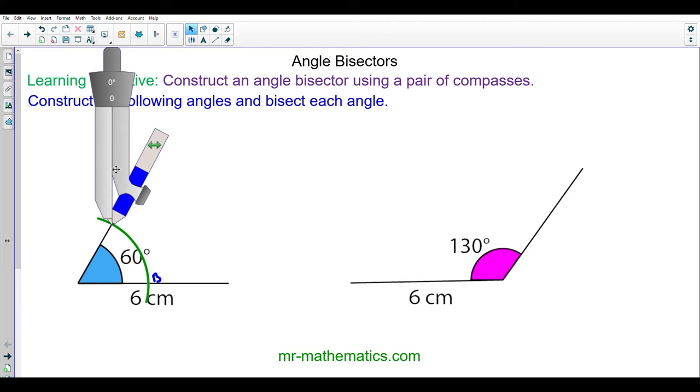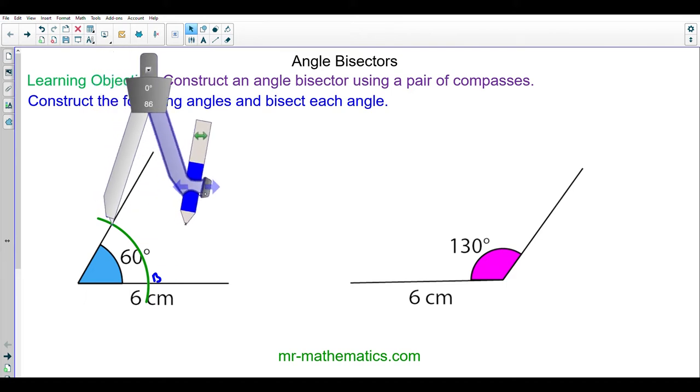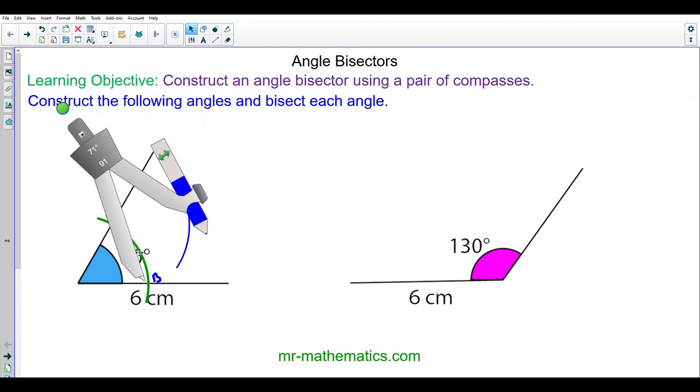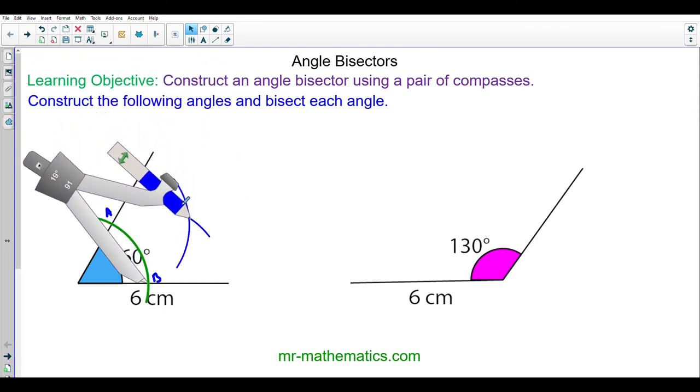I'm now going to create another arc of equal length from point A and from point B, and you'll see that the two arcs intersect. So I'll open up the compasses and draw an arc, move the compasses to point B and draw another arc.